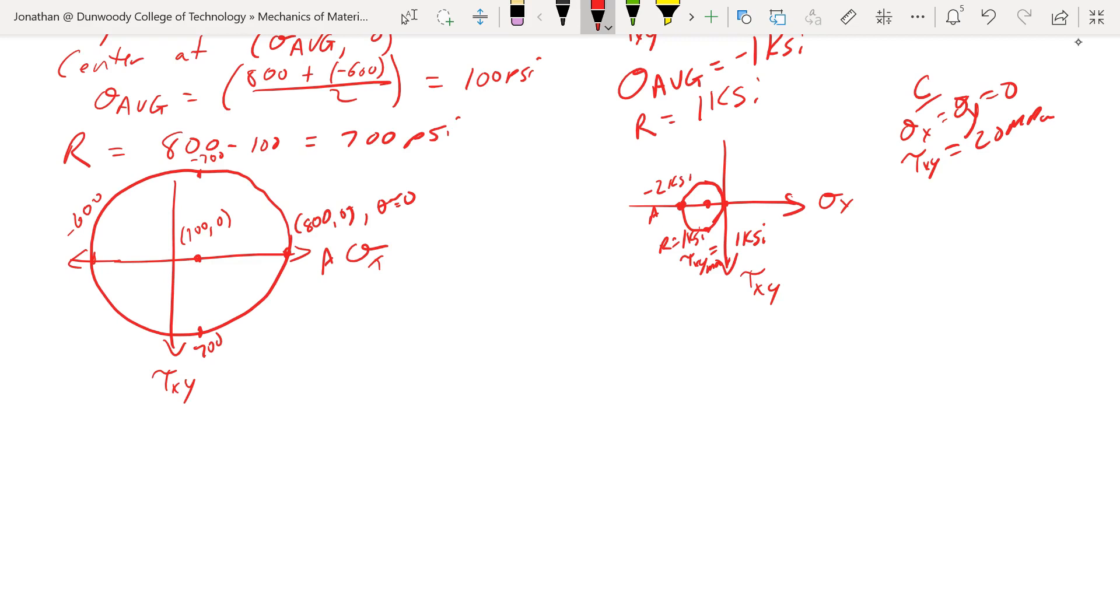Sigma average equals 0, so our center is going to be right there. So here is 20 megapascals, here's tau xy, sigma x, and it's going to be down there, 20 megapascals.